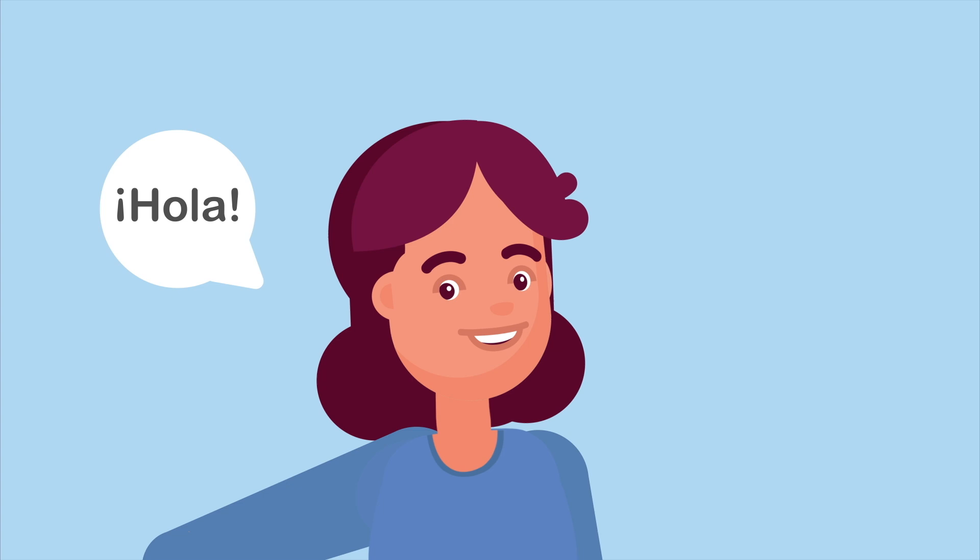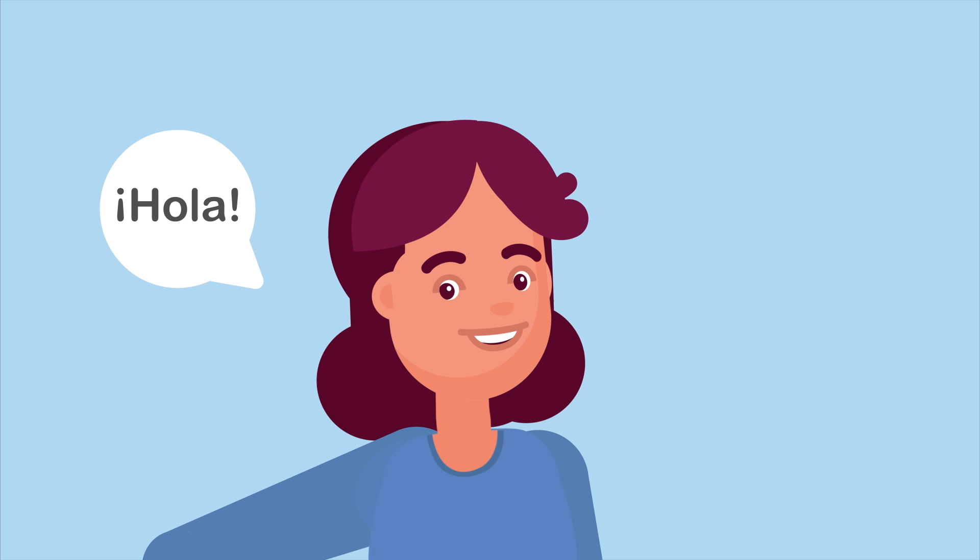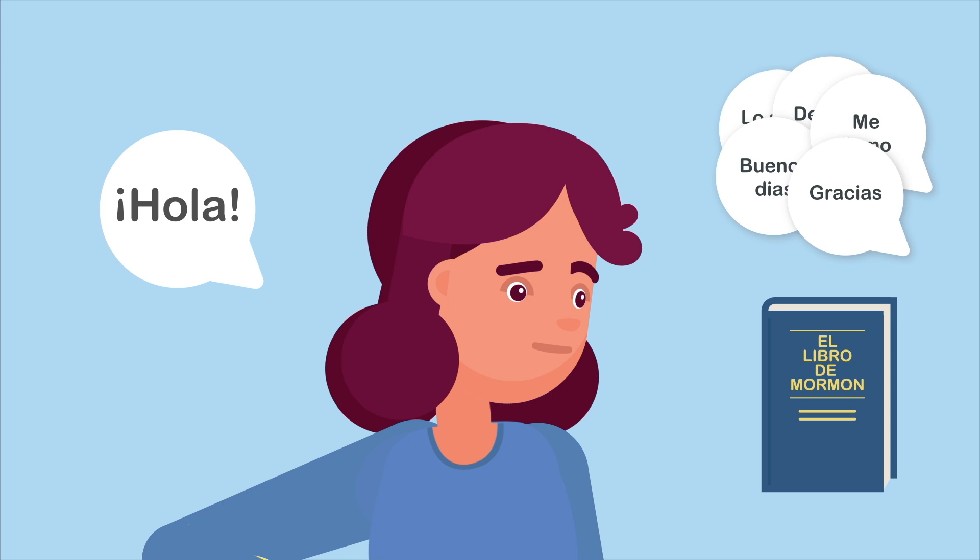Now, break down the chosen skill or behavior into a couple of habits that can be performed daily or weekly. This could be reviewing five words a day, or read a chapter of the Book of Mormon in Spanish every day. Now, just choose one habit. Let's choose review five words a day.